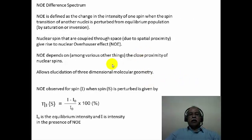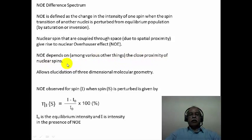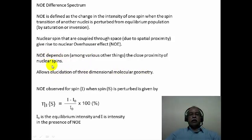We have already introduced the concept of nuclear Overhauser effect in the earlier lectures, so let me just refresh your memory. Nuclear Overhauser effect is defined as a change in the intensity of one spin when another spin transition is perturbed from the equilibrium population. What is important is that the nuclear Overhauser effect essentially depends on the close proximity of nuclear spins. If two hydrogens are present and one has to be observed under NOE conditions, it has to be in close proximity to the other hydrogen. Therefore, the distance relationship essentially gives important information about three-dimensional molecular geometry, and based on the NOE, one can determine molecular geometries fairly simply.